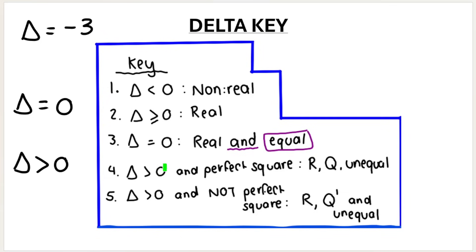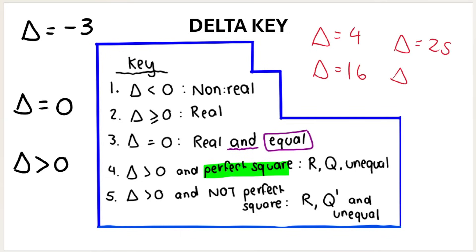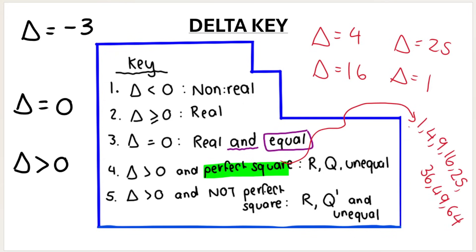If your discriminant is bigger than zero and it's a perfect square — so delta could be four, sixteen, twenty-five, or one — all of these values are perfect squares. You should know your common perfect squares. So if delta is equal to any of these values, your roots are rational. When they're rational, they're also going to be real and unequal. Remember, the only time that they are equal is if delta is zero.